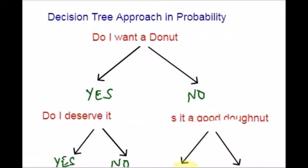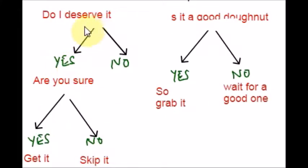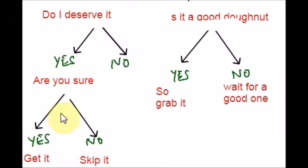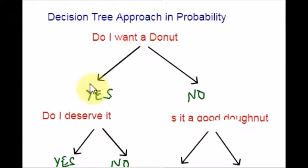So, if it is a good one — yes; if it is not a good one — no. And if you are going to choose it, are you sure or not? If yes, get it. If no, just skip it. Is it a good donut? If yes, you can grab it. If it is not a good donut, you can wait for a good one. Hope you understand this tree diagram. I have given all the possible options as branches. It starts from a single point and the branches go on, branching for all the possible solutions — it just looks like a tree.